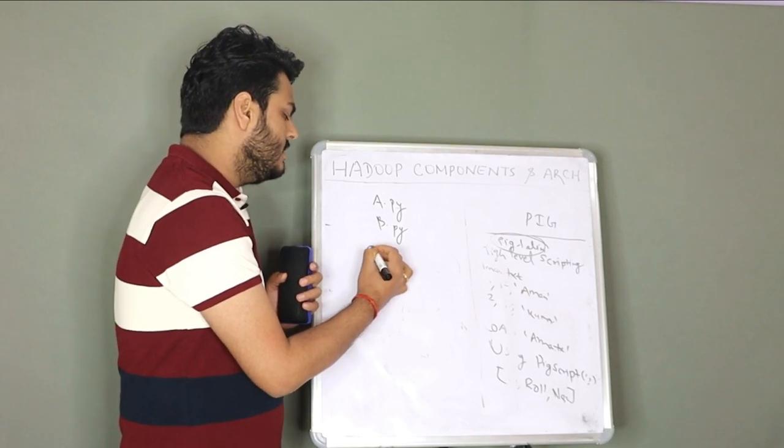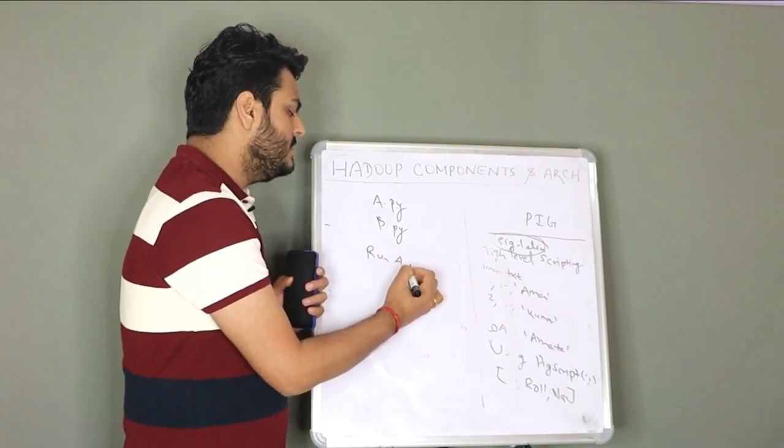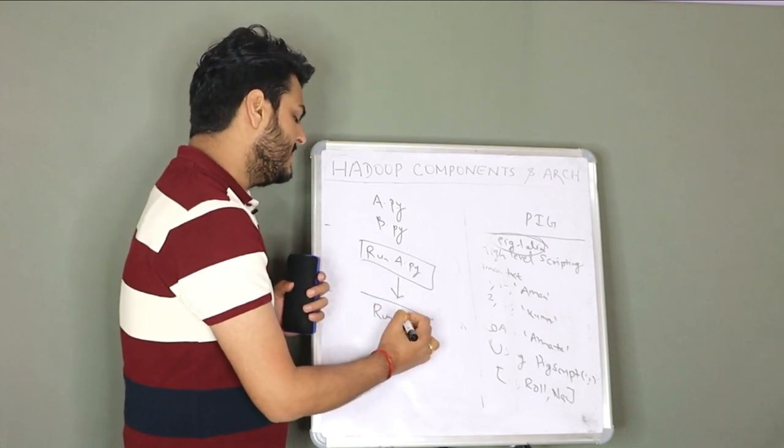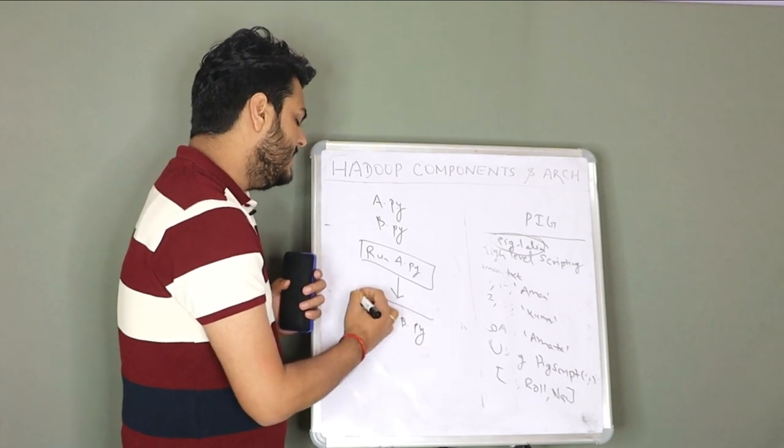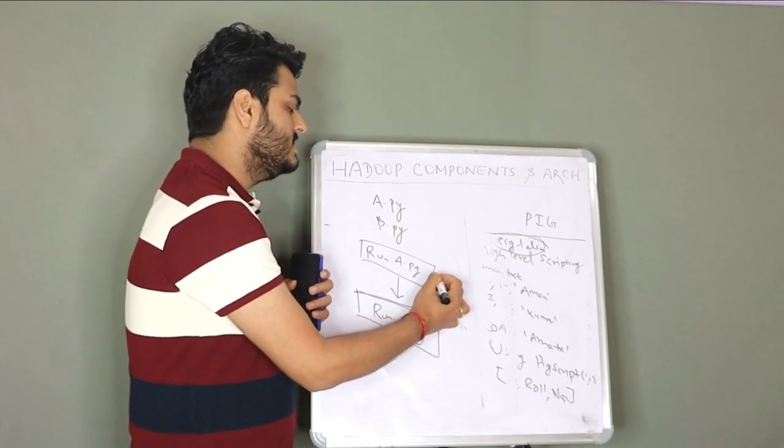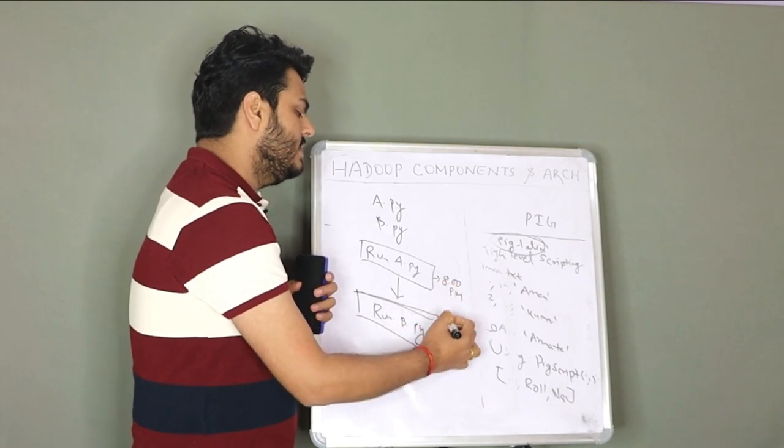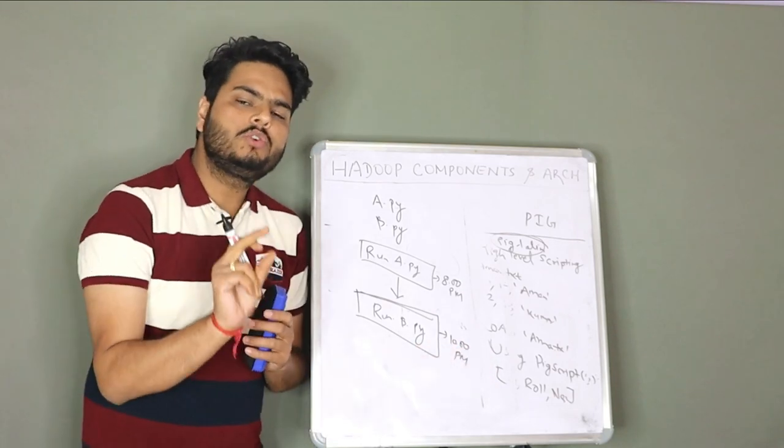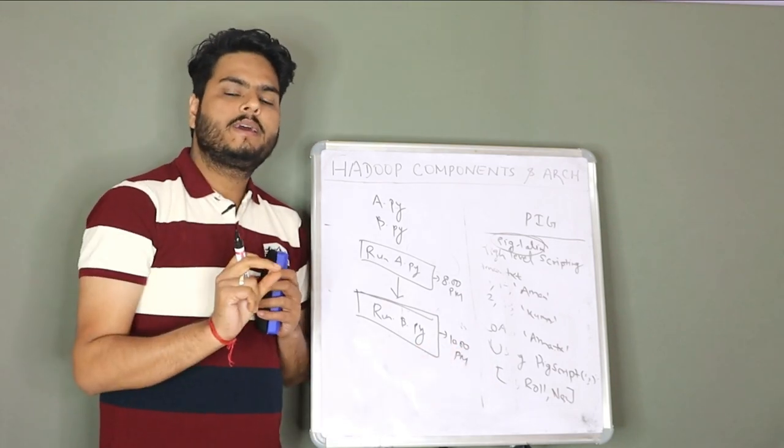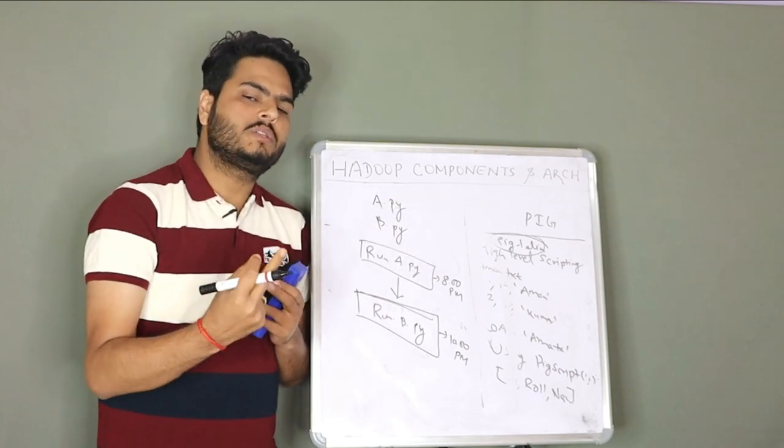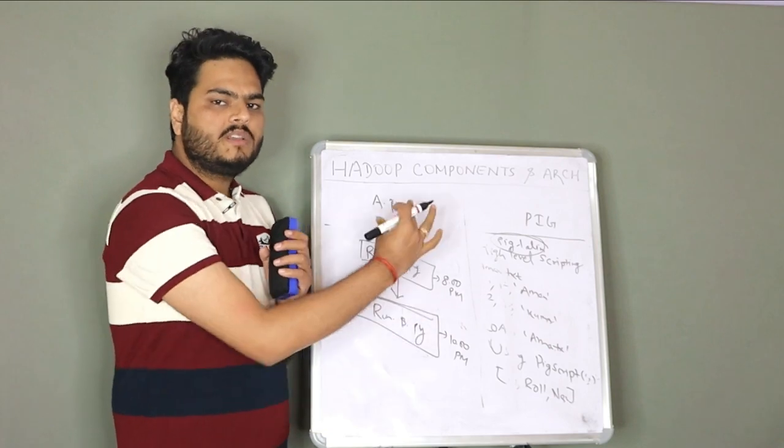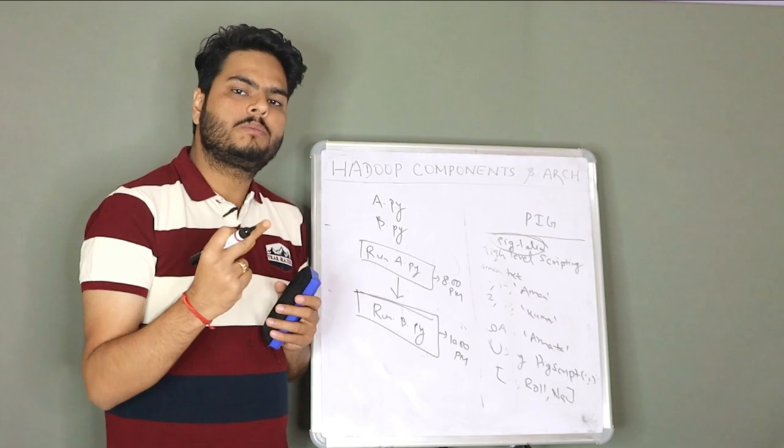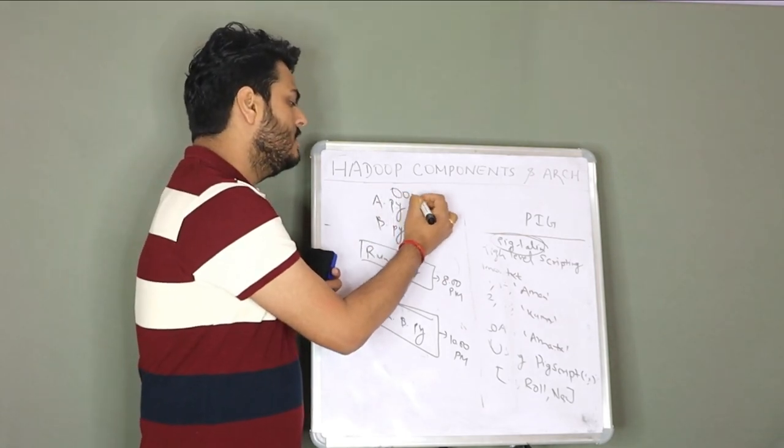You say run a.py and then run b.py. This way you can schedule. You can write the time when you want to run. For example, run this at 8 p.m. daily or run this at 10 p.m. daily. This way you can create a scheduler which will run every time you tell it to run or you set the frequency weekly, daily, monthly, whatever. This kind of arrangement is called a workflow and this is done in Hadoop ecosystem using something known as Uzi.